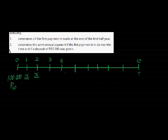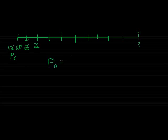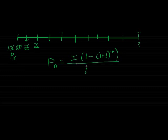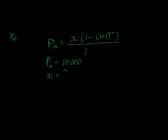Let's determine the monthly payment. They say the first payment is made at the end of the first half year — that's the first semi-annual period. Here's my formula; all I need to do is substitute and solve. Please always start with a formula, then do your substitution. I prefer writing down each variable and its value so that everything is nicely indicated.